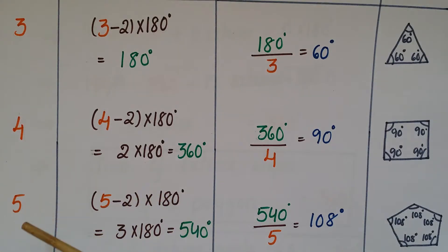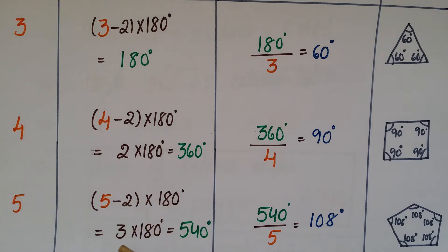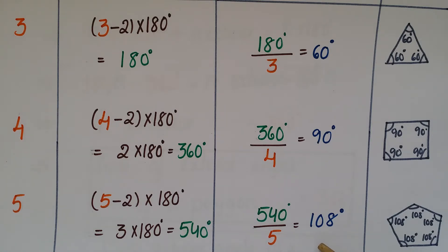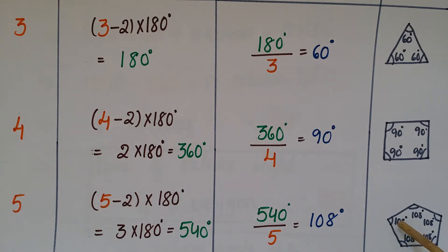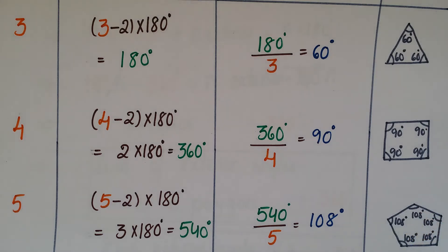Next, the number of sides is 5. The sum of angles is (5 minus 2) into 180, that is 3 into 180, which equals 540 degrees. Each interior angle is 540 divided by 5, which equals 108 degrees. This polygon is called a regular pentagon, and each interior angle is 108 degrees.